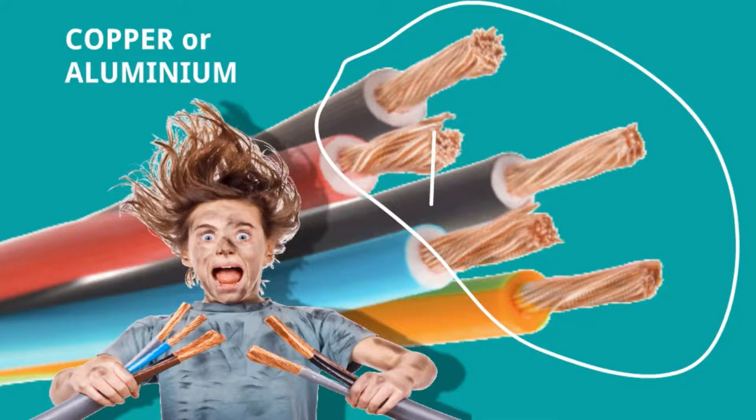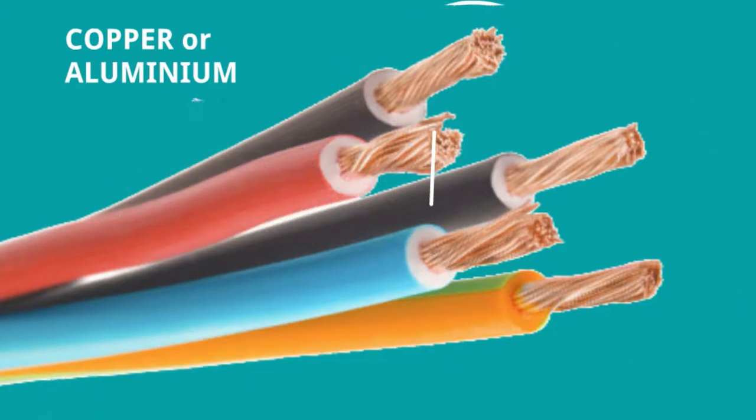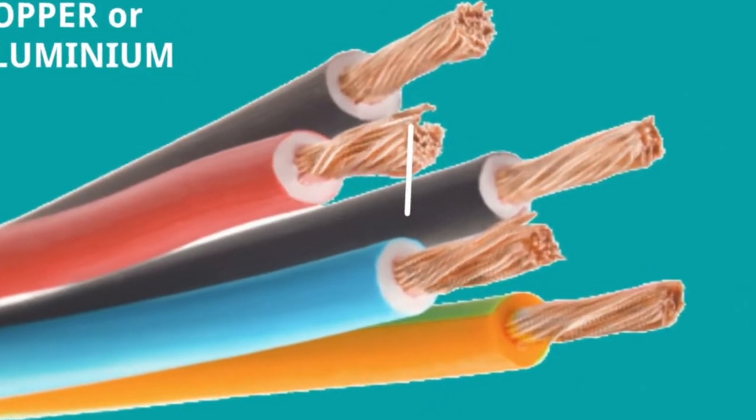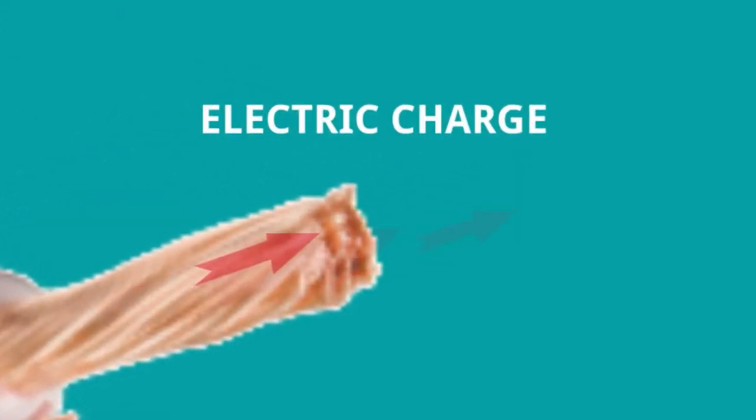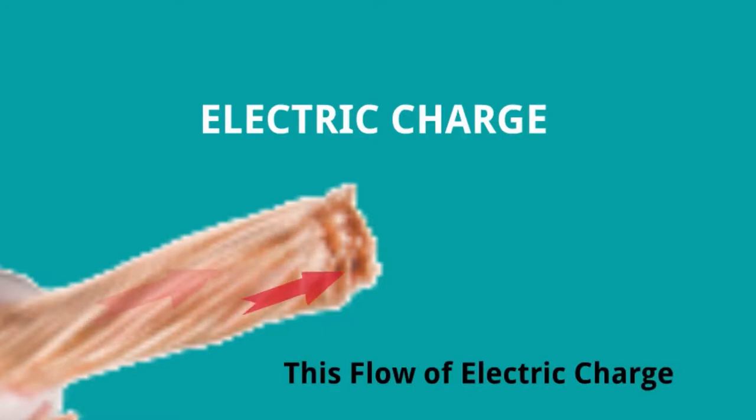There are so many people who died because if there is electricity within this wire you will get shock and it will be life-threatening. There are so many people who die every day because of electric shock. The electric charge is flowing like this, so this flow of electric charge makes electric current.